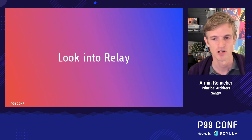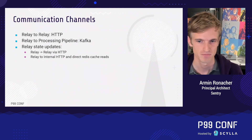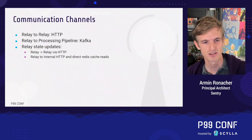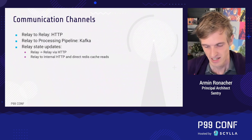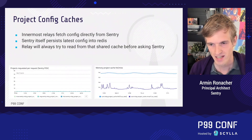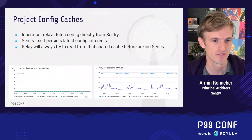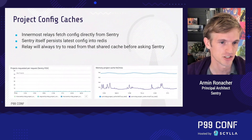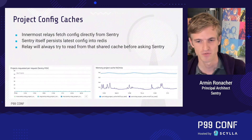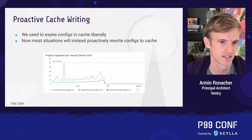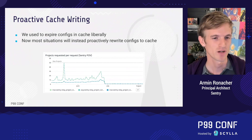Finally, I want to show how a small optimization became a fundamental architectural change. Relay talks to relay via HTTP, and the innermost relay also talks to Sentry via HTTP to fetch project config updates. That config endpoint got very busy, so we added caches. We then realized relay could read those caches directly, and today we're essentially never fetching via HTTP anymore — relay reads the same cache that the innermost Sentry populates. At one point we still had 10–20 projects fetched per HTTP request for the latest updates; now it's basically zero.